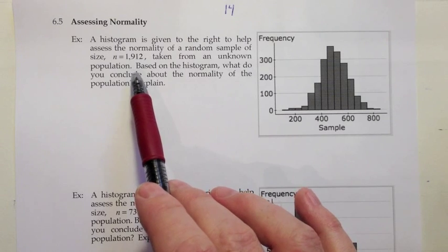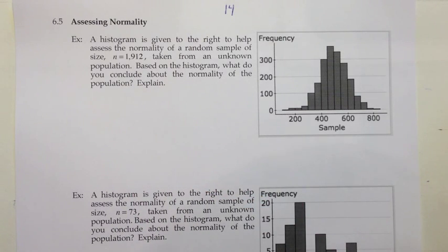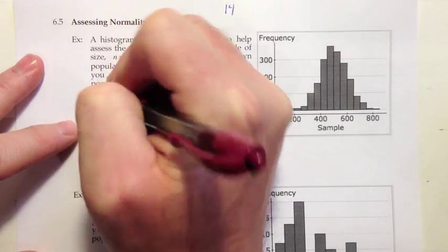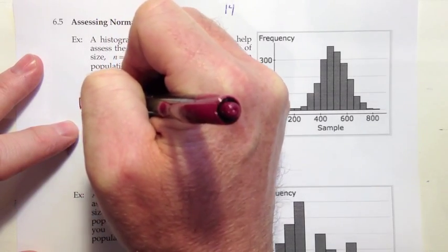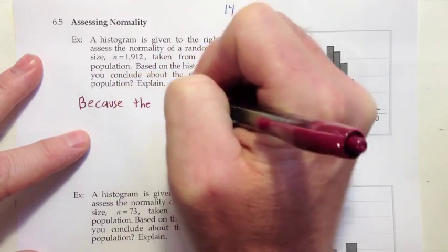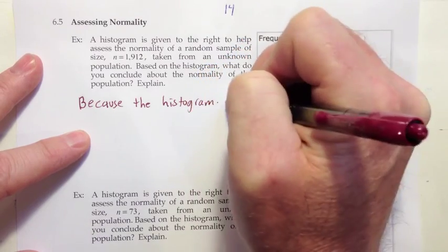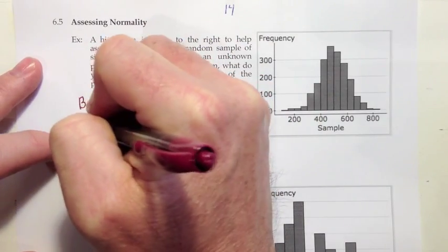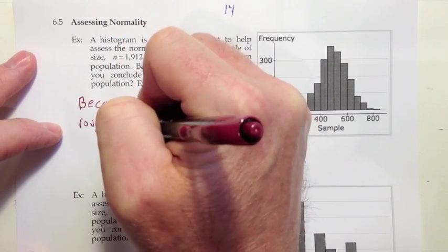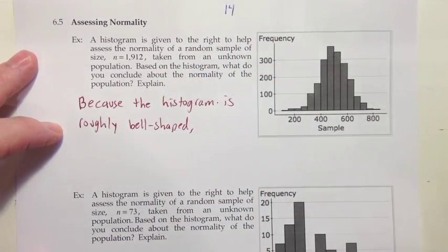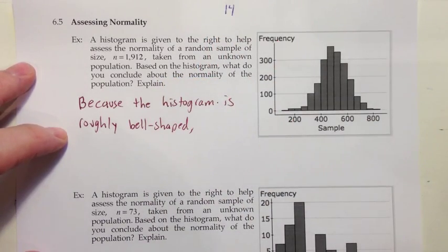We're trying to decide what the shape of the population is and we're just looking at the sample to help make that decision. Because our histogram is roughly bell-shaped, we can conclude that there's a reasonable possibility the sample was taken from a normal population.